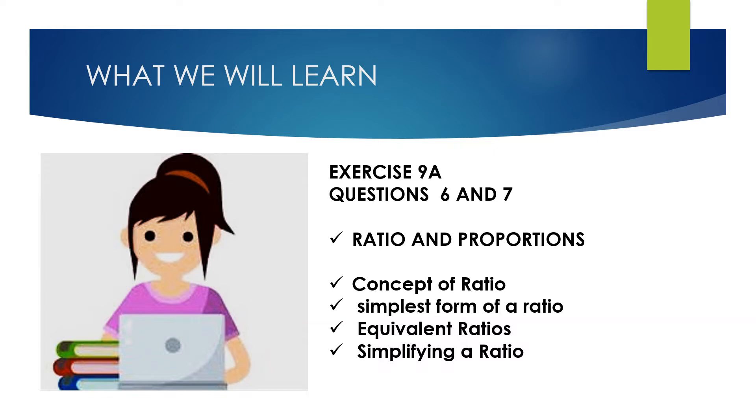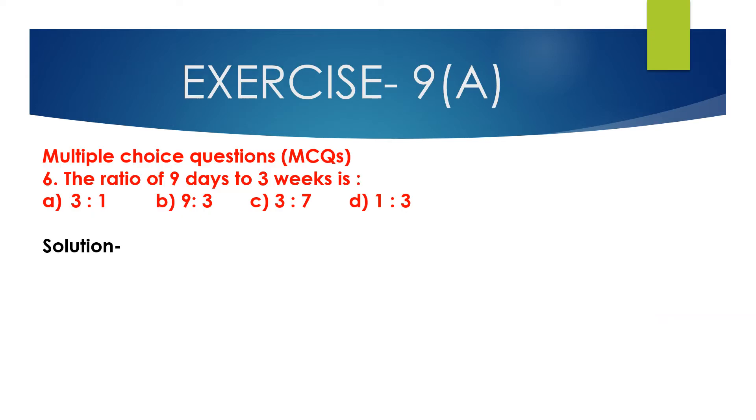Let's solve some questions. Now we will solve multiple choice question number 6. The ratio of 9 days to 3 weeks is - the options are 3:1, 9:3, 3:7, and 1:3. The ratio of 9 days to 3 weeks, so ratio is 9 days is to 3 weeks.